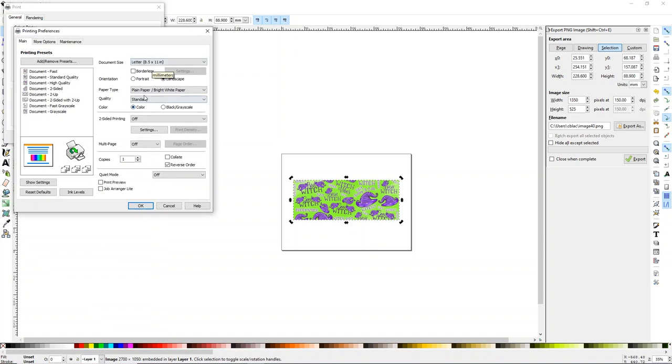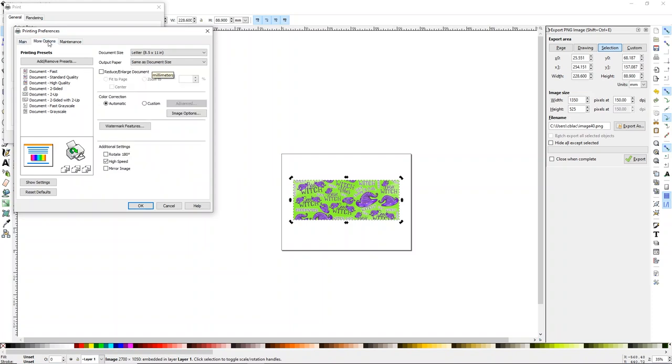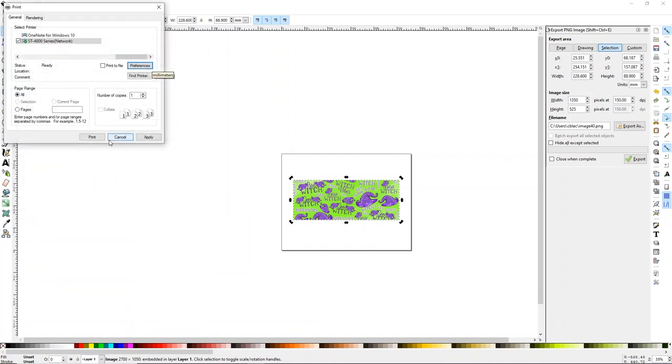So you can either flip this on your page because you need to mirror sublimation prints. So if you come up here to the top, you'll see where you have flip selected objects vertically or horizontally. If we flip it horizontally, it mirrors our image. And then we can simply print. But let's say we don't want to flip it that way. There's another option. If you go to file print, you're going to choose the printer that you're going to use. So we're going to use our ST 4000. That one is loaded with our StarCraft paper and our StarCraft ink. And I'm going to click on preferences. The first thing that I want to do is change my quality to high. And then I'm going to go into more options. Under the more options setting, I'm going to turn off high speed and I'm going to turn on mirror image. That's automatically going to flip the image in our printer. Now, all we have to do is hit OK and click print.